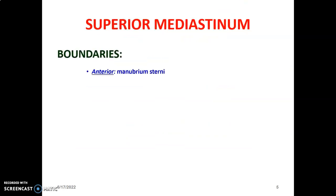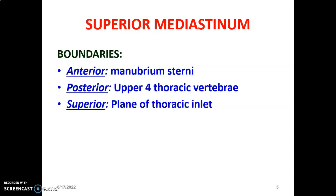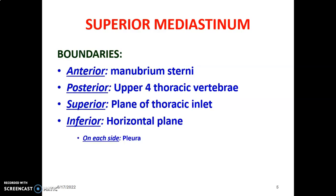The superior mediastinum boundaries: anteriorly the manubrium sternum, posteriorly the upper four thoracic vertebra, and superiorly the plane of the thoracic inlet. The thoracic inlet is bordered by the manubrium sternum anteriorly, the first rib and its internal borders, and posteriorly the first thoracic vertebra. Inferiorly, the superior mediastinum is demarcated by the horizontal plane from the sternal angle of Louis to T4-T5 junction, and on each side by the lower pleura.